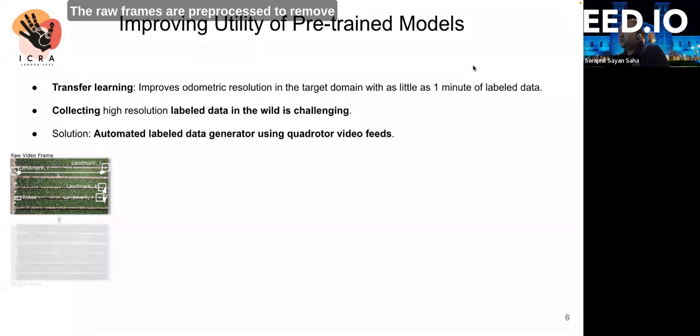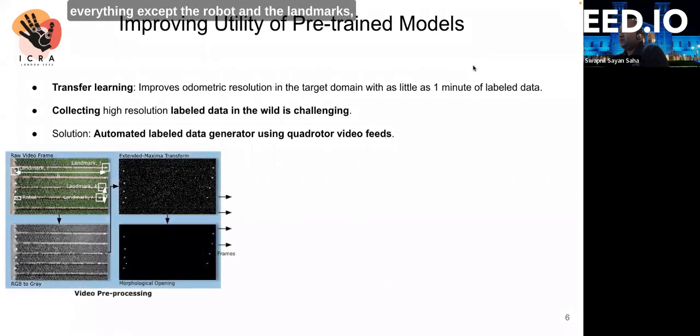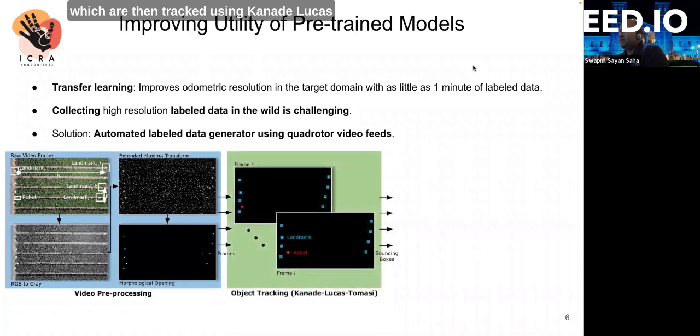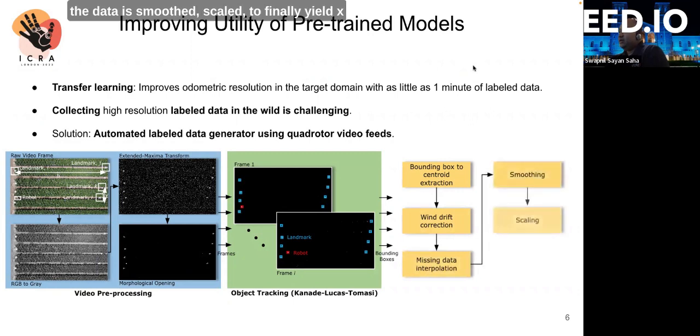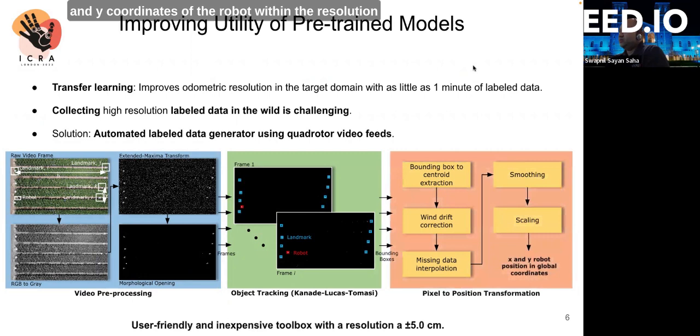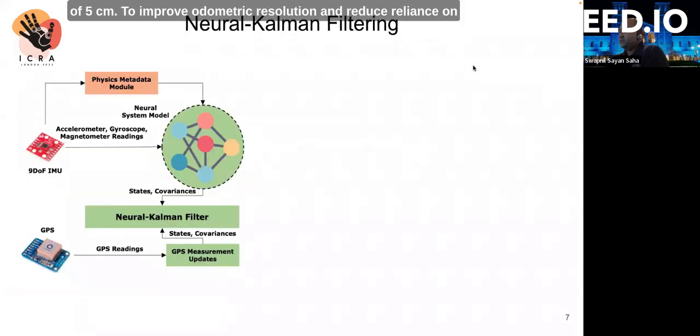The raw frames are pre-processed to remove everything except the robot and the landmarks, which are then tracked using Kanade-Lucas-Tomasi algorithm to generate bounding boxes. Centroids are extracted from these bounding boxes and corrected for wind drift using reference landmarks. Any missing data is interpolated, and then all the data is smoothed and scaled to finally yield x and y coordinates of the robot within a resolution of 5 cm.